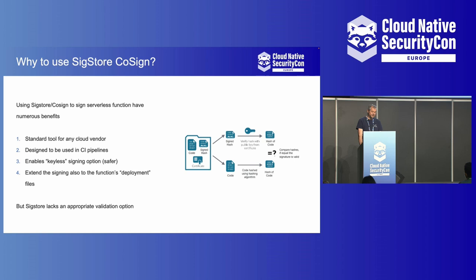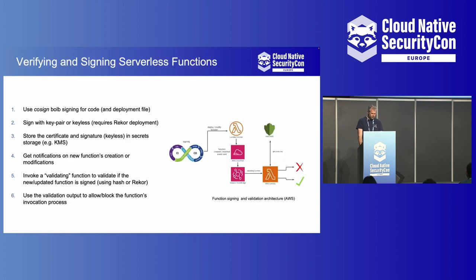For example, you have the keyless signing option, which is slightly safer. It's very nice to implement, though still slightly challenging to deploy. You can also extend it to sign the deployment file, not just the function code. However, SigStore still lacks an appropriate validation option for serverless functions. It has a validation admission controller for Kubernetes, but it lacks one for serverless functions.